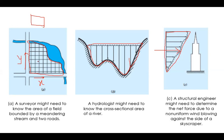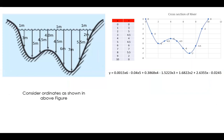Let me take the river cross-section example to show how to get this equation for direct integration. Assuming coordinates: y-values of 3, 5, 4.5, 4, 4.5, 6, 7, 5.5, and 2 meters at regular intervals of 1 meter, giving a river of total top width of ten meters and a maximum depth of seven meters.